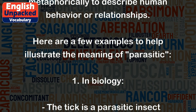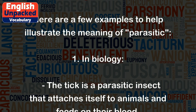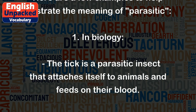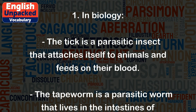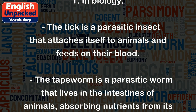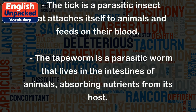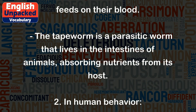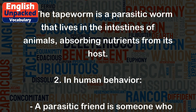Here are a few examples to help illustrate the meaning of parasitic. In biology, the tick is a parasitic insect that attaches itself to animals and feeds on their blood. The tapeworm is a parasitic worm that lives in the intestines of animals, absorbing nutrients from its host.